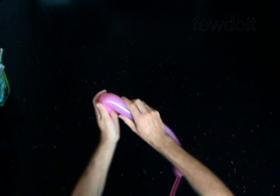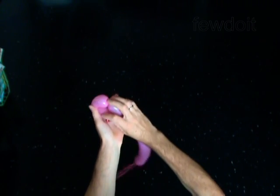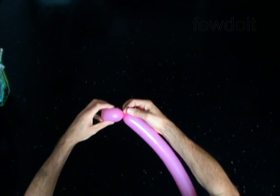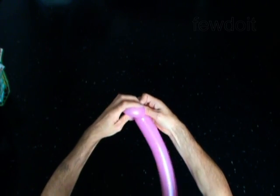Twist the first soft 3-inch bubble. Lock both ends of the first bubble in one lock twist. You have made the hat.